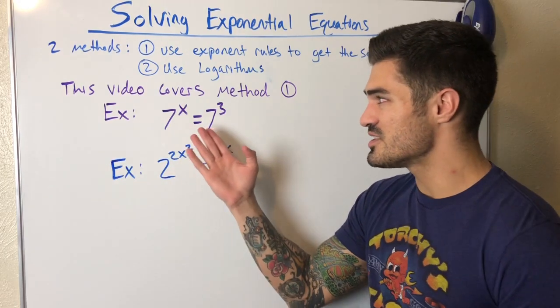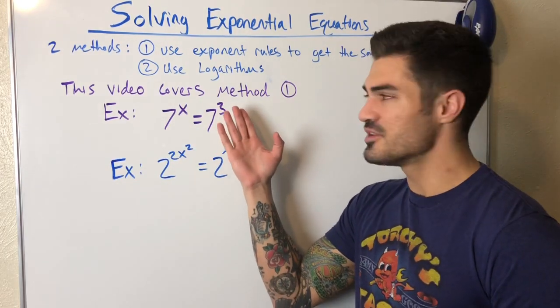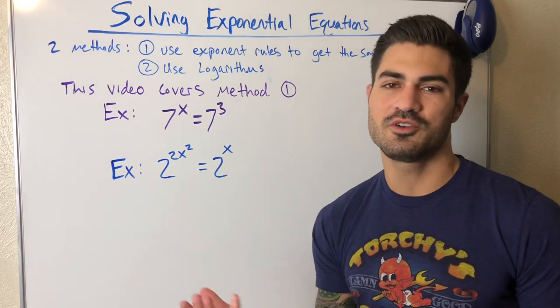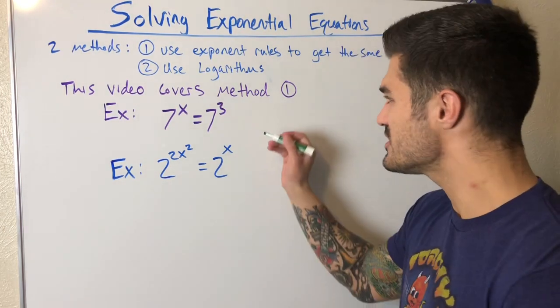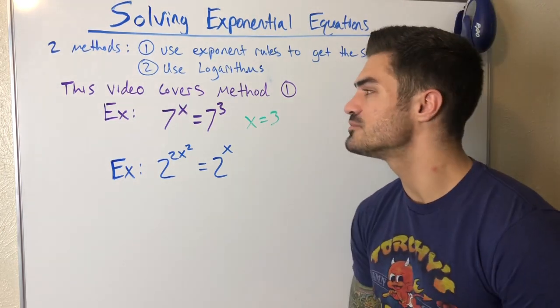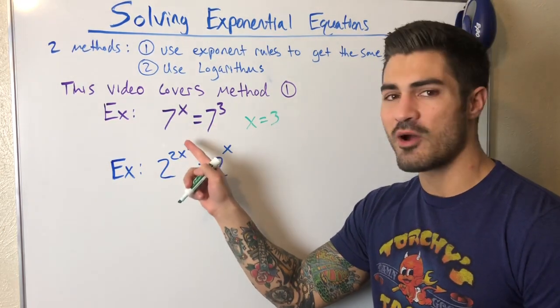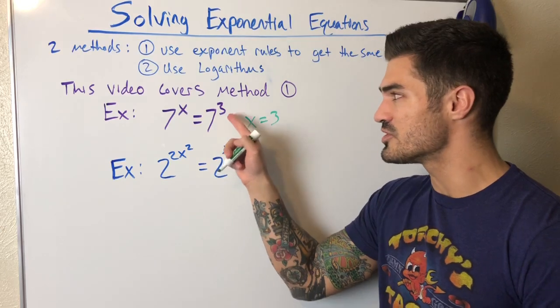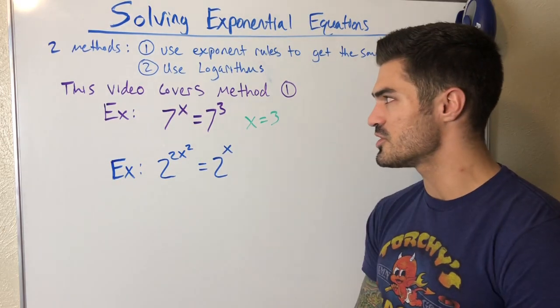This is a good example. Seven to the x equals seven to the third. Clearly x equals three. You could probably see that just by looking at it. So we can write a general rule from this.